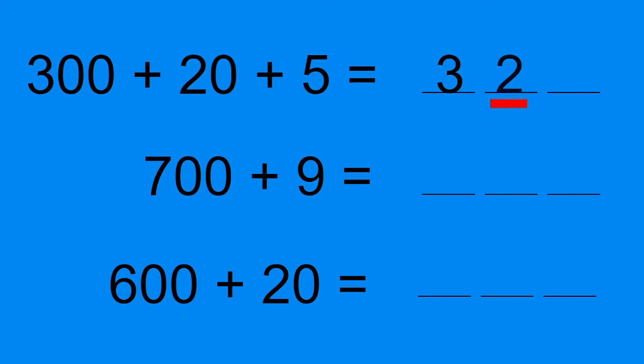What number are we going to write in the tens place? Yes, it's a 2 for the 20. What number are we going to write in the ones place? Did you say 5? 300 plus 20 plus 5 equals 325. Well done.